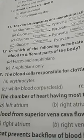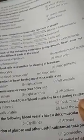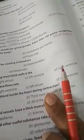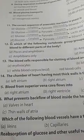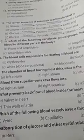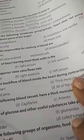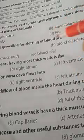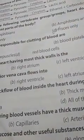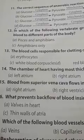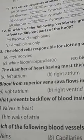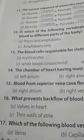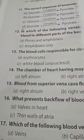Question number 12: in which of the following vertebrate groups does the heart not pump oxygenated blood to different parts of the body? Options are fishes and amphibians, amphibians and reptiles, amphibians only, or fishes only. Fishes have a 2-chambered heart, while amphibians and reptiles have a 3-chambered heart, so there is a chance of oxygenated blood being pumped in amphibians and reptiles. The answer is D — fishes only.